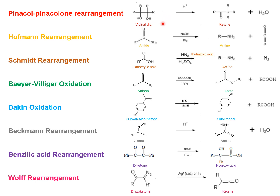This general reaction applies when all R groups are equivalent or the same. If they are different, there are factors which decide which R group will migrate, which OH will be removed as water, and which OH will be converted into a ketone. These factors include steric hindrance, migratory aptitude of the R groups, and stability of the carbonium ion.